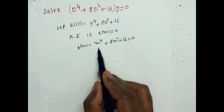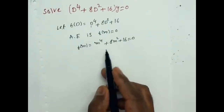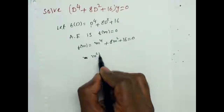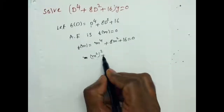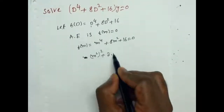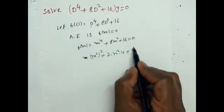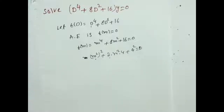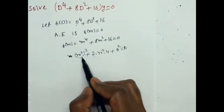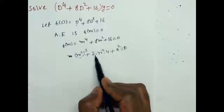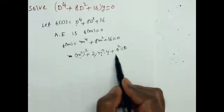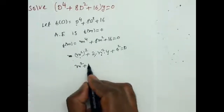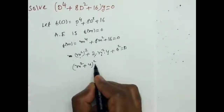This is a 4th degree equation, so it has 4 roots. I am writing m⁴ as (m²)², plus 2 into m² into 4, plus 4². This is in the form a² + 2ab + b², where a = m², b = 4. So we can write it as (m² + 4)² = 0.